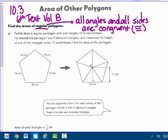Patrick drew a regular pentagon, meaning it's equal-sided. As you can see here, 16 centimeters. If you were to measure all of these angles, they would be exactly the same. With side lengths of 16 centimeters, he divided that pentagon into 5 identical triangles and measured the height of one of the triangles to be 11 centimeters. Find the area of the pentagon.